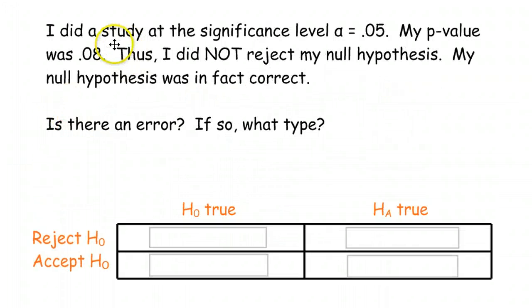So, some quick examples. I did a study at the significance level of alpha is 0.01. So, this is lower than 0.05. My p-value was 0.008. So, even though alpha was low, we still were able to reject. So, the first thing I'm going to do is make sure that I know that I am rejecting the null. Despite this very low p-value, my null hypothesis later turned out to be correct. Whoa. So, even though you rejected, it turned out that the null was a true statement. So, is there an error? And if so, what type? Yes, there is an error. And that would be, when you reject and you shouldn't have, that is Type I.